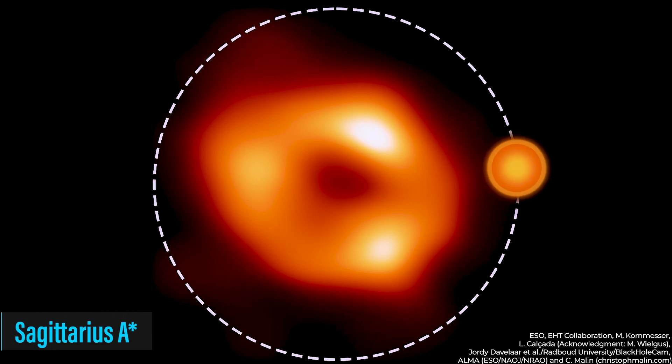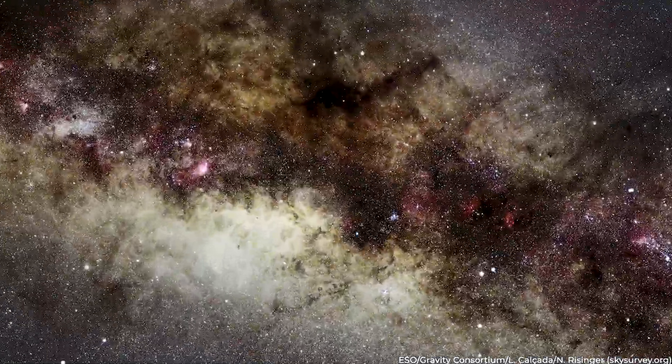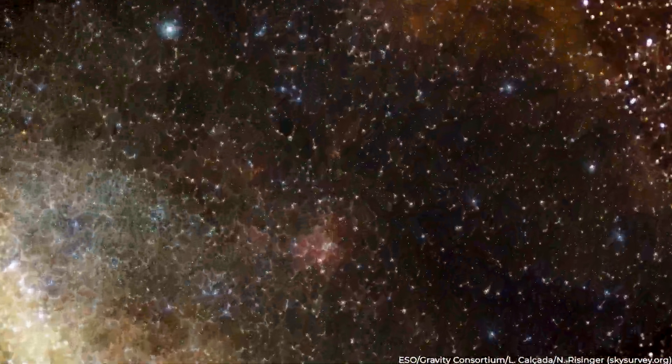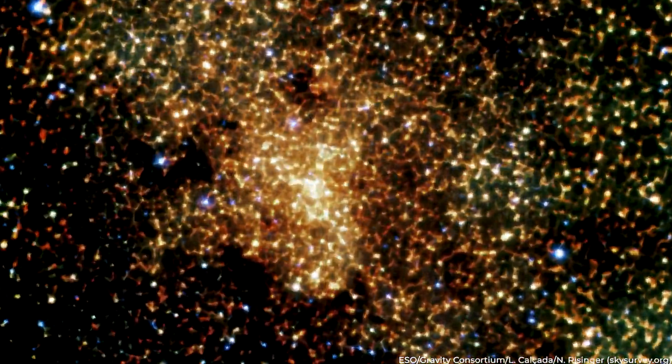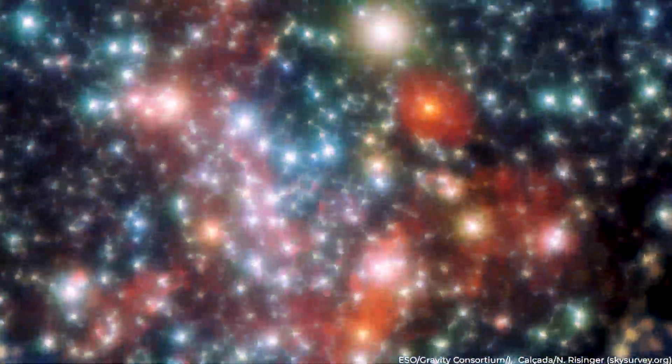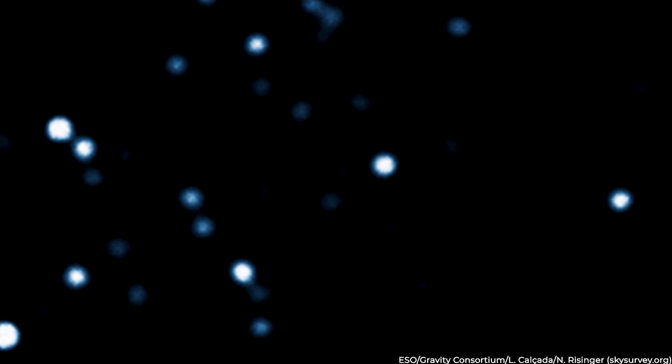Scientists unveiled the first ever photograph of Sagittarius A, the black hole at the heart of the Milky Way galaxy in May 2022, thanks to developments in the Event Horizon Telescope program. Although at first glance this may not seem to have anything to do with white holes, learning more about the dynamics of black holes may lead to groundbreaking discoveries about white holes and other mysteries of the cosmos.